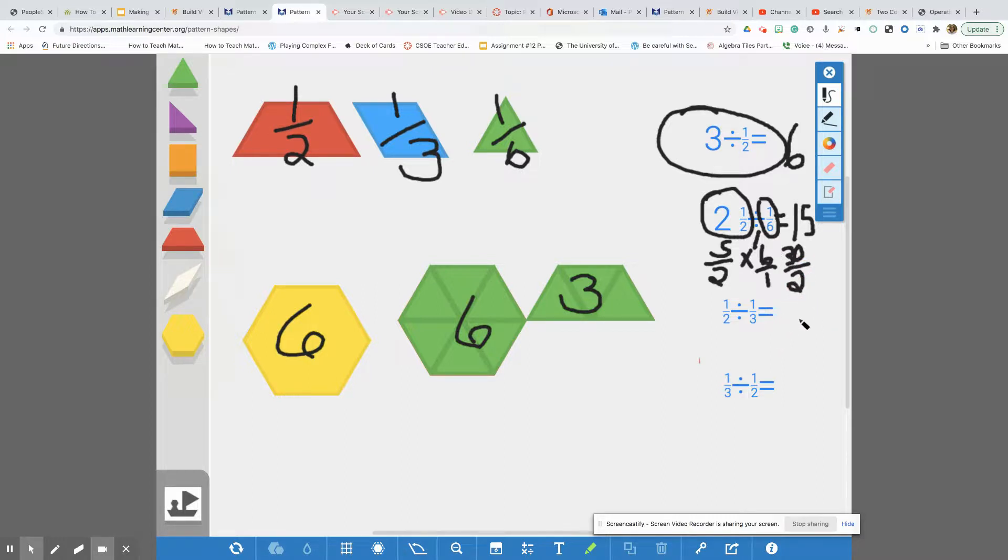And two times one is two. So our answer is thirty over two. And as you know, this isn't a proper fraction. I can divide two. Remember, when we see the denominator, we always want to divide two into thirty. Thirty divided by two is fifteen. So we actually came to the same exact answer when we used our visual model.